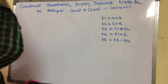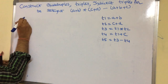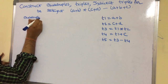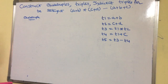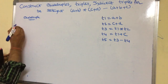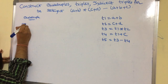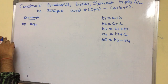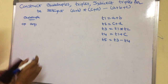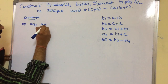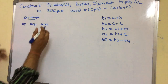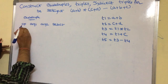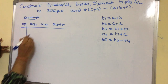Now we have to represent these three address code instructions in the form of quadruple and triple. In a quadruple, the instruction contains four fields. The first field is op, where op stands for operator. The second field is arg1, which stands for argument 1. The next field is argument 2. And the last field is the result of that operation.